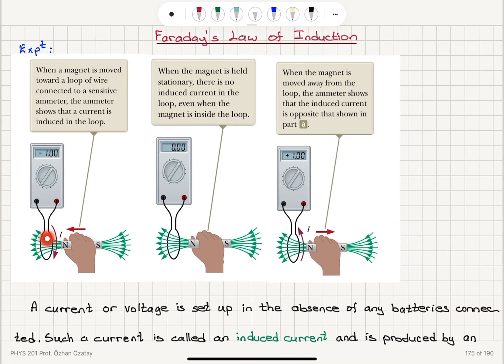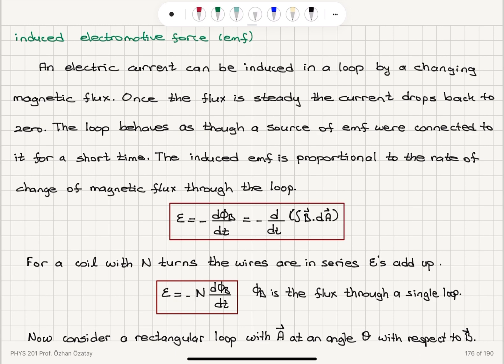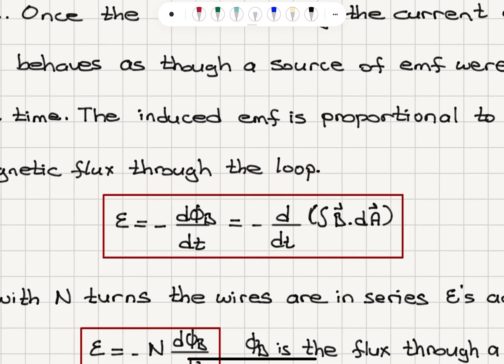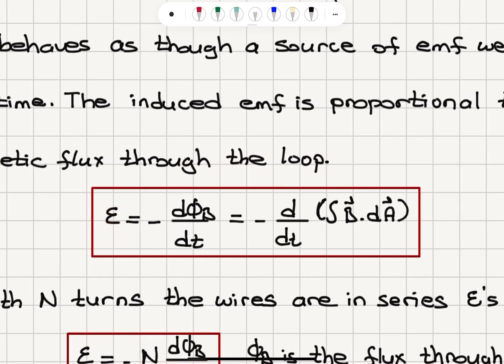This is a transient effect. When we move it, we see the current. When we stop, the current drops back to zero. The loop behaves as though a source of EMF were connected to it for a short time. The induced EMF is proportional to the rate of change of magnetic flux through the loop.